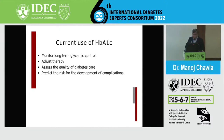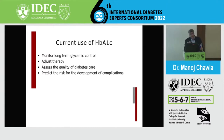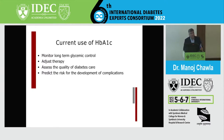Currently, HbA1C is used to monitor long-term glycemic control and guide therapeutic decisions. Most clinicians would find it difficult to make therapeutic changes based only on fasting, post-lunch, or SMBG values without an HbA1C. Today, many would also find it difficult without additionally looking at CGM data beyond HbA1C and SMBG.